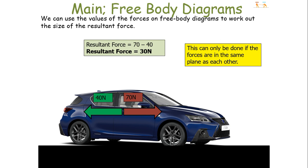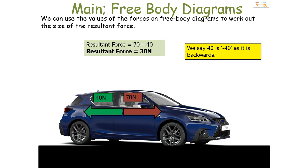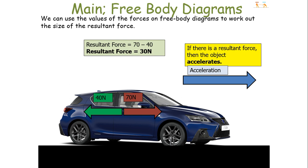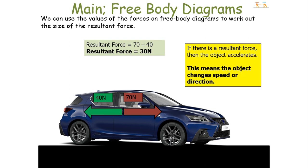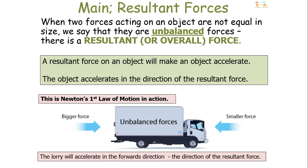We can only do this if the forces are in the same plane as each other. We can say 40 is acting as minus 40 because it's going backwards — the opposite direction to motion is deemed negative. If there is a resultant force, the object accelerates — in this example the car will accelerate forward. To clarify, to accelerate means to change speed or change direction, and the object will always accelerate in the direction of the resultant force. When two forces are unequal in size, they are unbalanced and there is a resultant force, making the object accelerate in that direction.